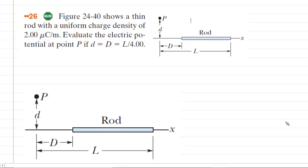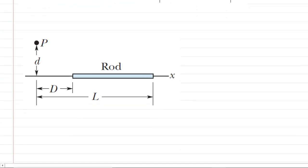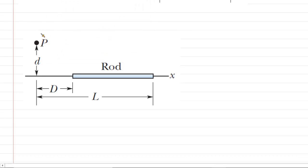To begin to understand that, let's come down below and blow up the picture a little bit. What we'll do is superimpose a y-axis here, and then we already have an x-axis running horizontally across the picture.